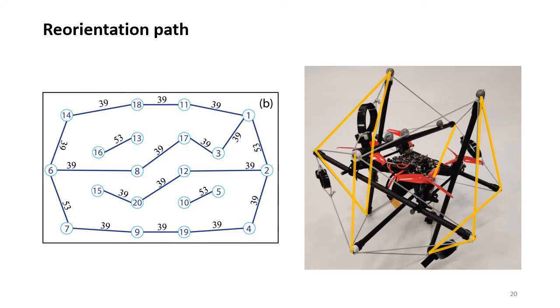However, during an experiment, we find that not all rotations on the graph are feasible. Some rotations require very large body torque that the vehicle cannot generate. The corresponding edges of these rotations are highlighted in yellow in the picture on the right. And we take out these rotations from the reorientation graph.